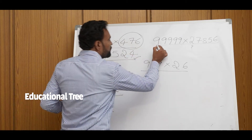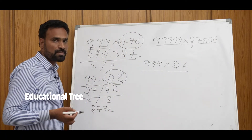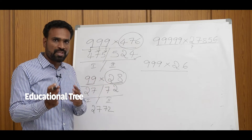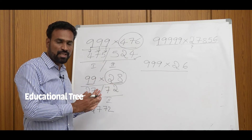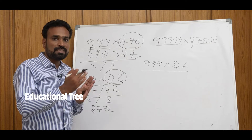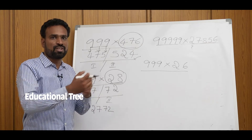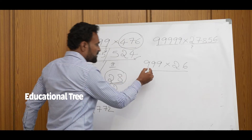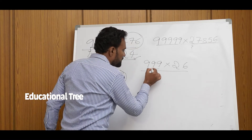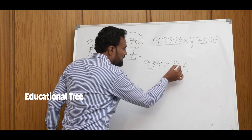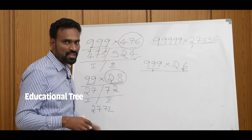In this problem, there are four nines and four digits. We apply one less to the number, and it has the same number of digits. If the number of digits is less than the number of nines, we add leading zeros to make them equal. So we arrange the digits accordingly.